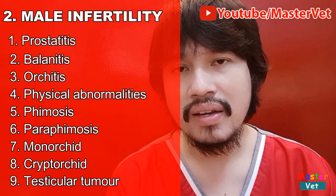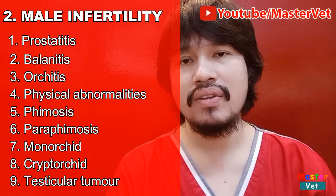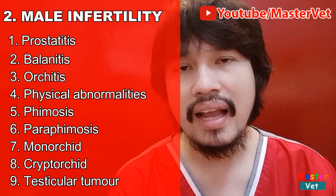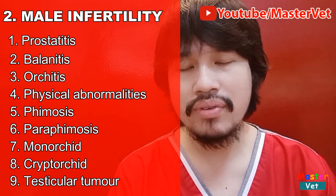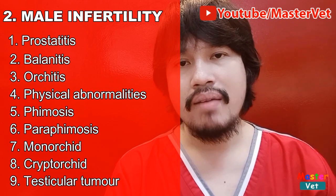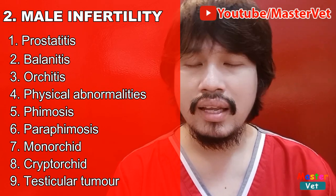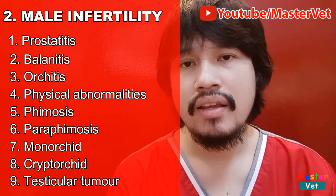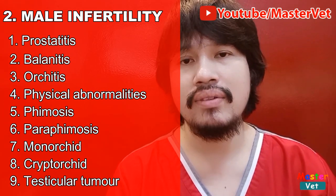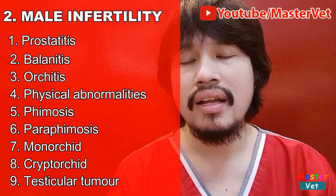Kapag may cryptorchid, kung saan yung left and right testicles ay hindi lumabas, hindi nag-descend — so, magkukos ito ng infertility sa lalaking aso. Kapag may testicular tumor, may tumor na tumubo doon sa balls ng lalaki, magkakaroon ng problema. So, magpuproduce ng female hormones yung katawan — nakikita natin na nag-shed yung aso at lumalaki yung mammary gland ng lalaking aso dahil sa production ng female hormones.